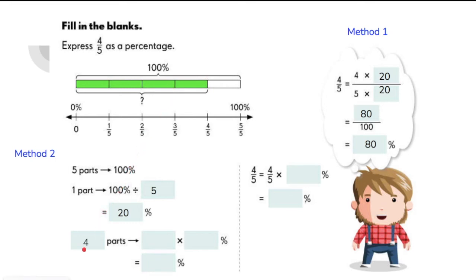We are looking for 4 fifths or 4 out of 5. So 4 parts of it is equal to 4 times 20% will give us 80%. Now you have seen that we got the same answer as method 1.